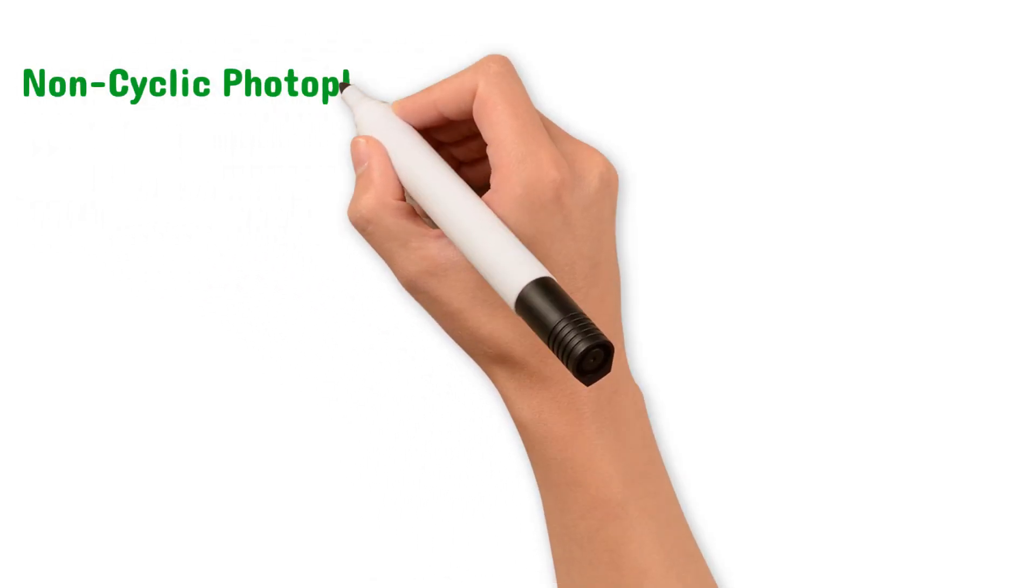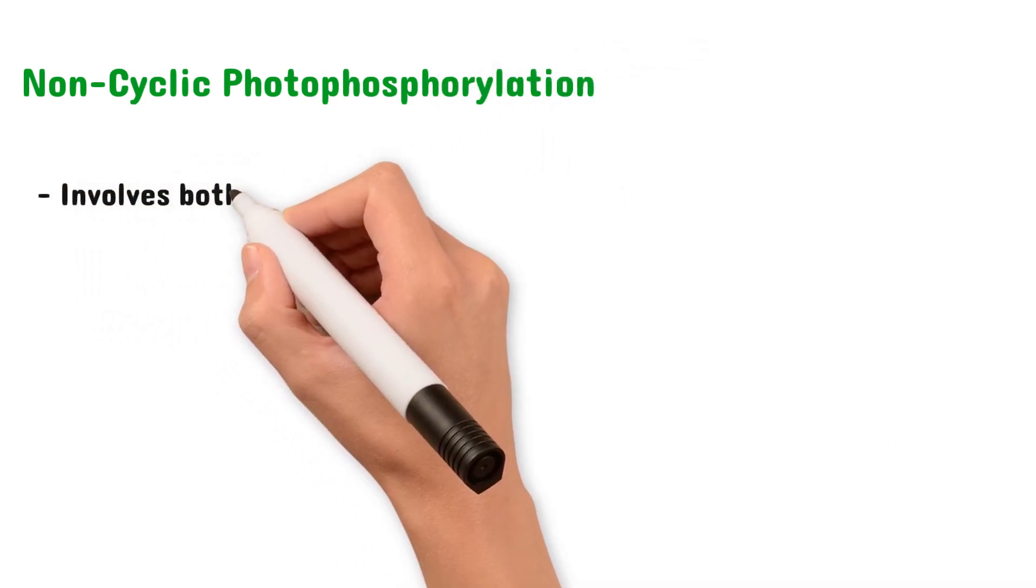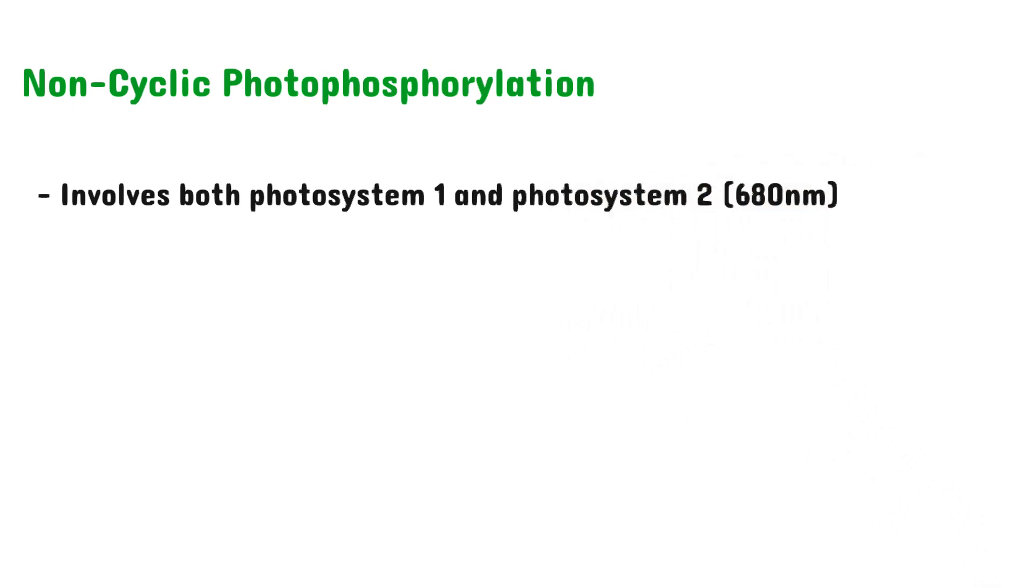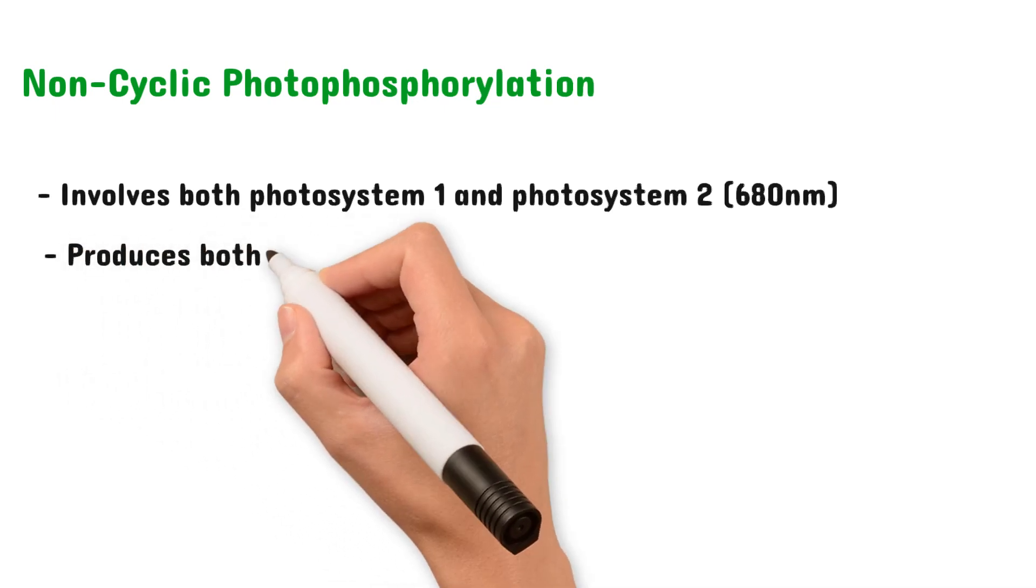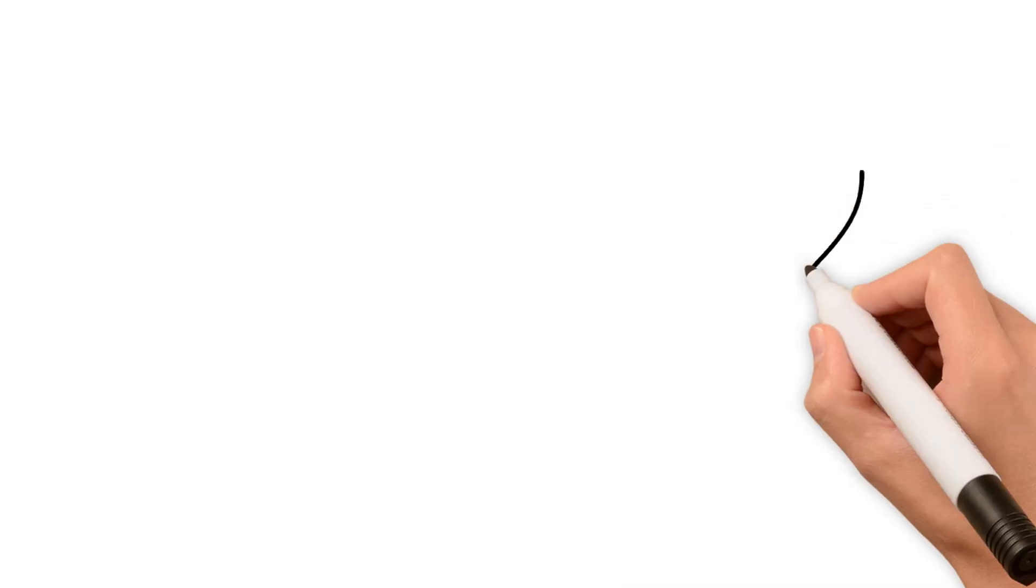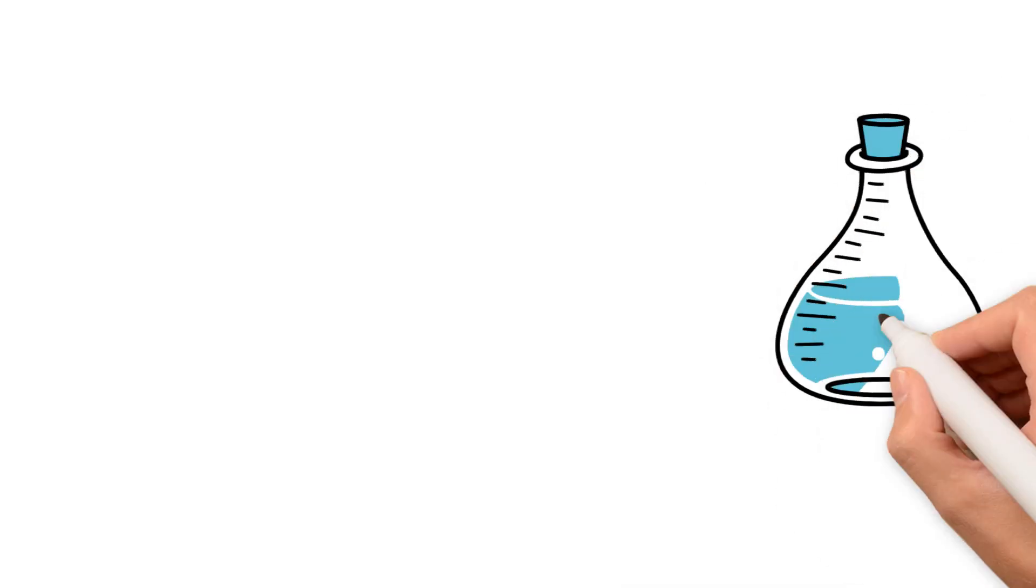Now let's move on to non-cyclic photophosphorylation. This stage involves both photosystem I and photosystem II. Photosystem II is also a combination of pigments, but it absorbs light with wavelengths 680 nanometers. This stage also produces both ATP and NADPH. Let's outline what happens step by step.